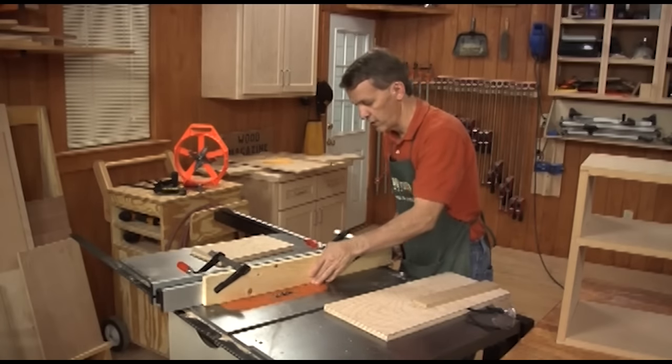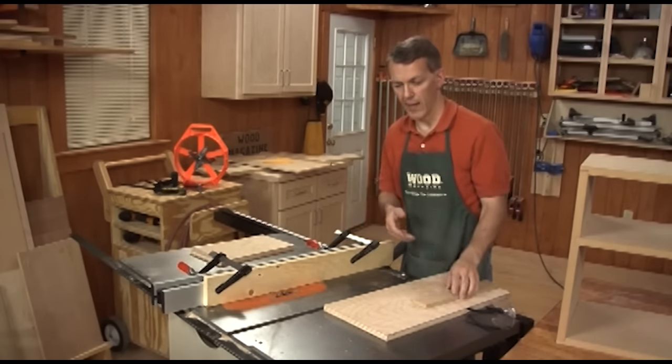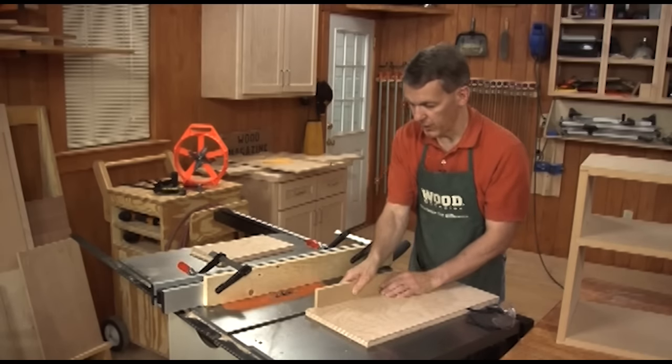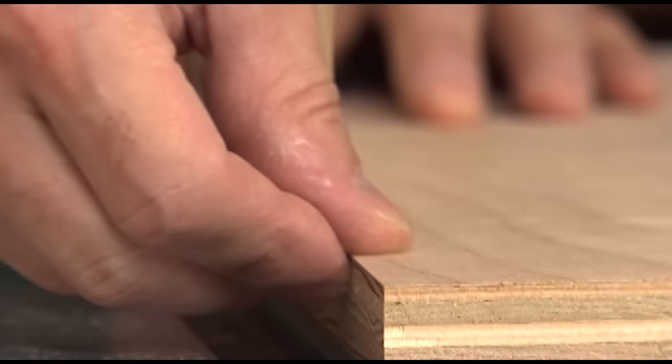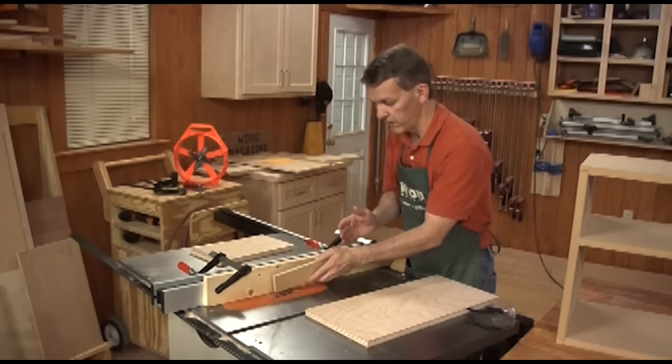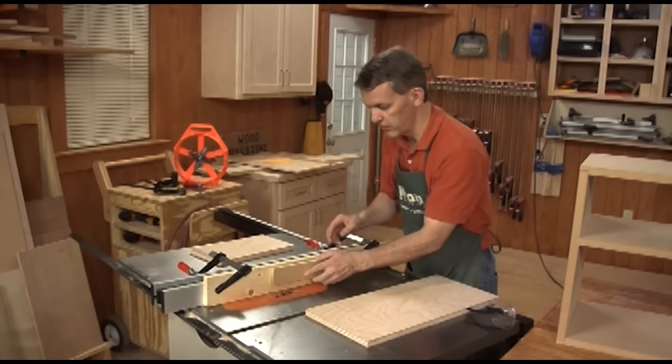Now that I've got that set, the next thing to consider is the width of my rabbet. In this case, I'm going to take a piece of half-inch MDF and make a rabbet that seats that MDF right in the edge of this plywood panel. I'm going to use the MDF itself as a gauge to set the width of my blade to the fence.